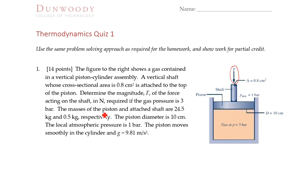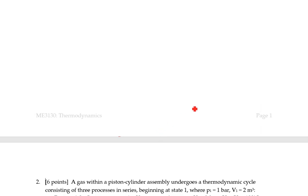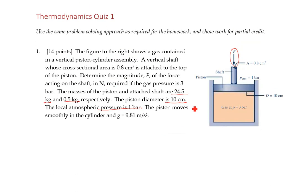We know the masses of the piston and the shaft: 24.5 kilograms for the piston and half a kilogram for the shaft. We know the diameter of the piston is 10 centimeters, and the local air pressure is one bar, and our gravity is standard Earth gravity, 9.81 meters per second squared.